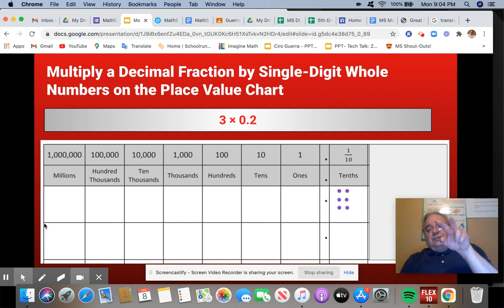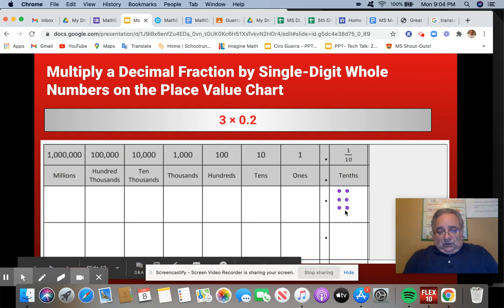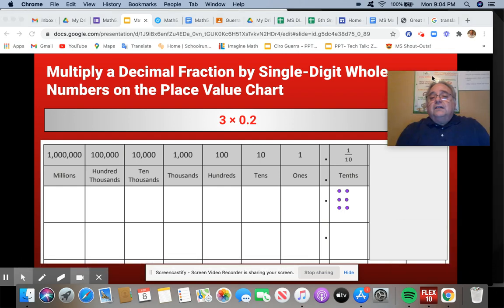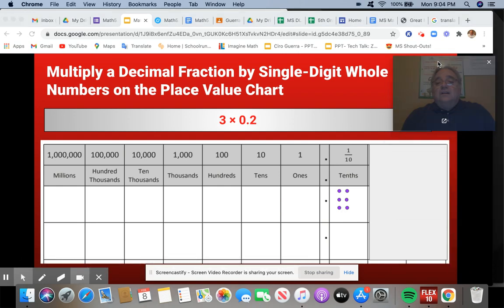So let me go ahead and draw this out. And if you can see, I have two units of two tenths, one unit two tenths, second unit two tenths, and then the third unit of two tenths. That gives me a total of six tenths.